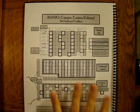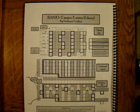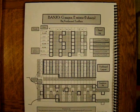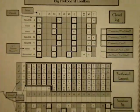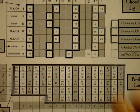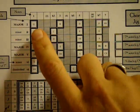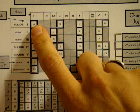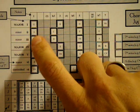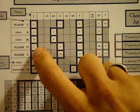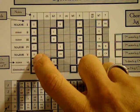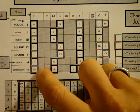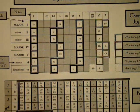We're going to flip to the key of G major. In the key of G major, the key is based on the notes G, A, B, C, D, E, F sharp, and then back to G.